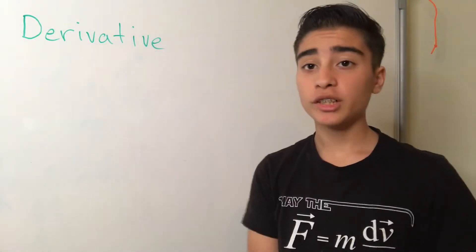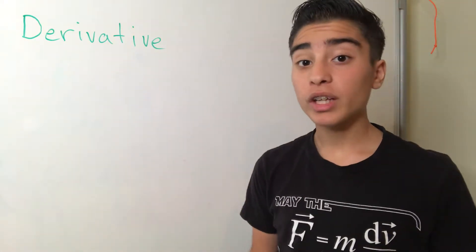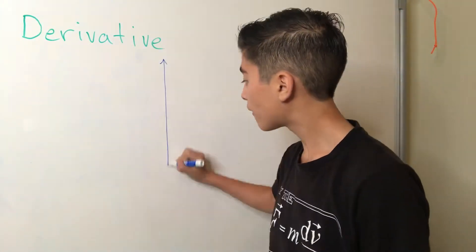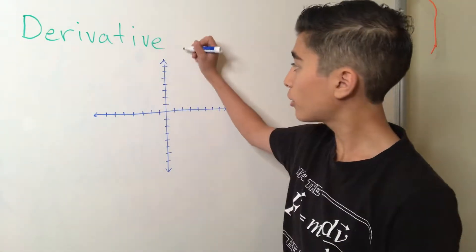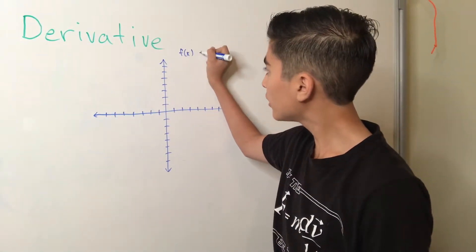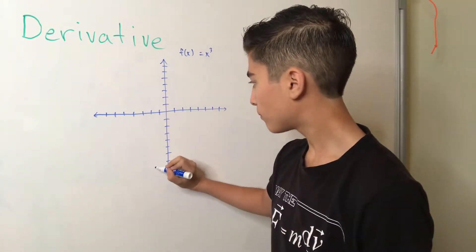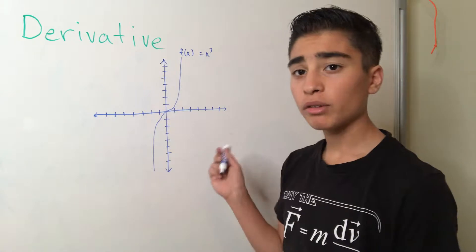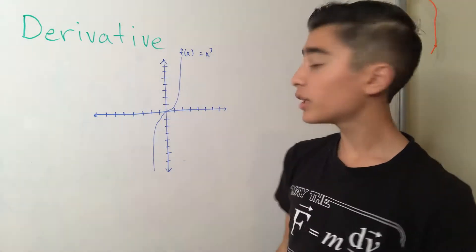But before we get into projectile motion itself, I'd like to introduce the concept of the derivative, which basically explains how to represent change mathematically. Let's say we have the graph as a function f of x is equal to x cubed. That graph looks something like this. Now how do we represent change throughout the whole graph mathematically? Well, there's a simple way to do it.